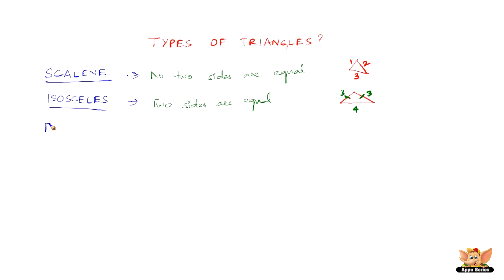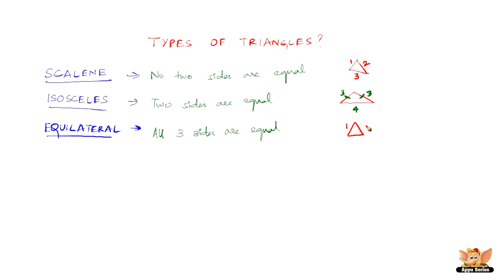Another kind of triangle is called an equilateral triangle. An equilateral triangle is a triangle in which all the sides are equal. For example, all sides would be one, or two, or three — all the same — and we mark it like this. So this shows that all three sides are equal.